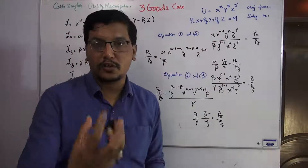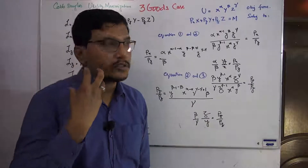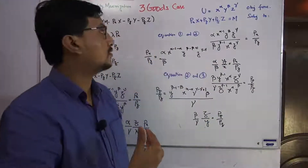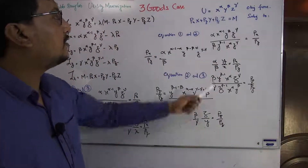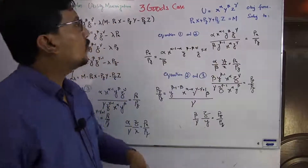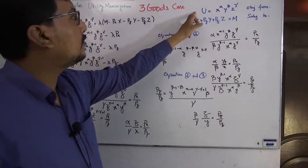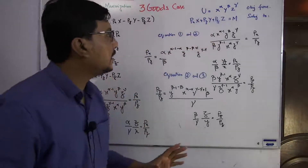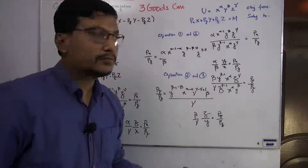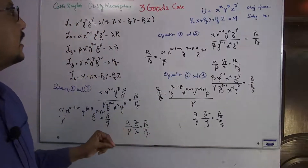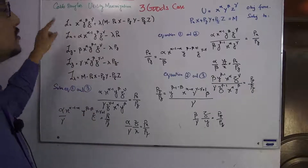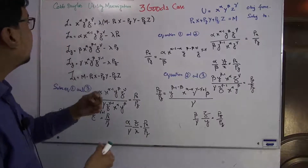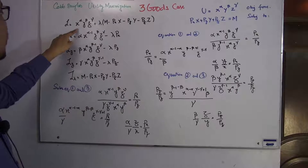If we are consuming three commodities, then the total expenditure must be up to our income — or less. For analysis purposes, we use the equality. So this is the utility function we want to maximize subject to the budget constraint. Since we have the objective function subject to a budget constraint, we simply need to use the Lagrange multiplier. In the three-good case, the setup is a little bit different from the two-good case.